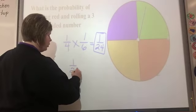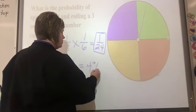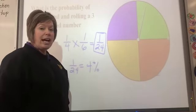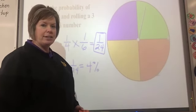So 1 out of 24 has a percent of about 4%. Does that sound likely to happen? Not so much. Is it impossible? No, but not likely.